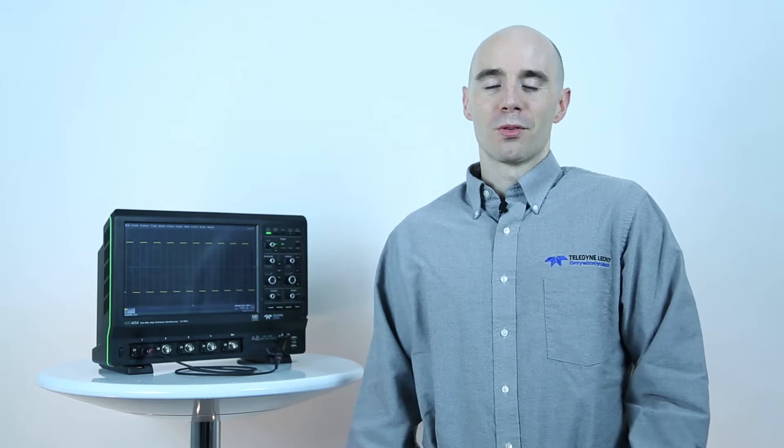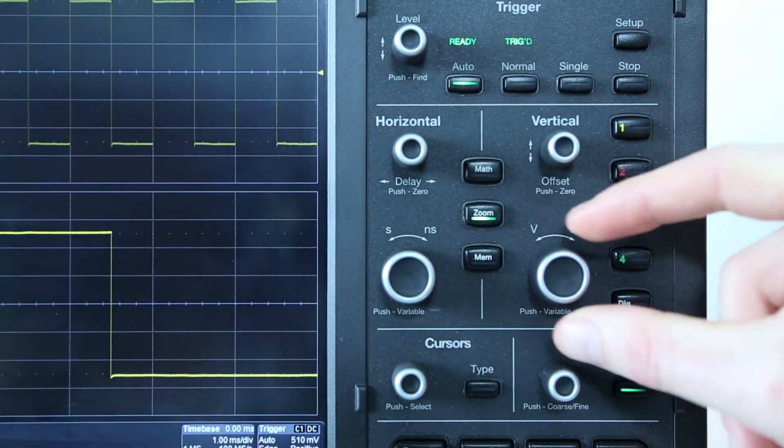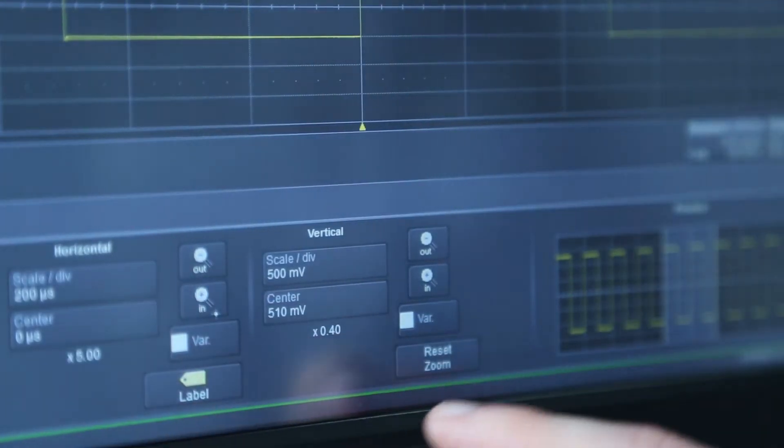To turn on a quick zoom, touch the zoom front panel control button. Once activated, you can adjust the scale of the zoom using the horizontal and vertical front panel controls, or by modifying the settings in the zoom dialog.